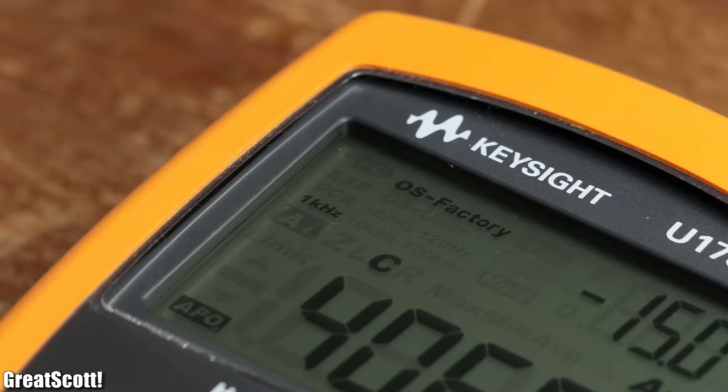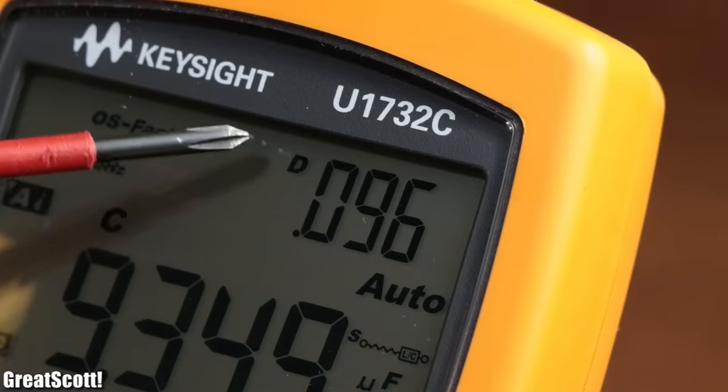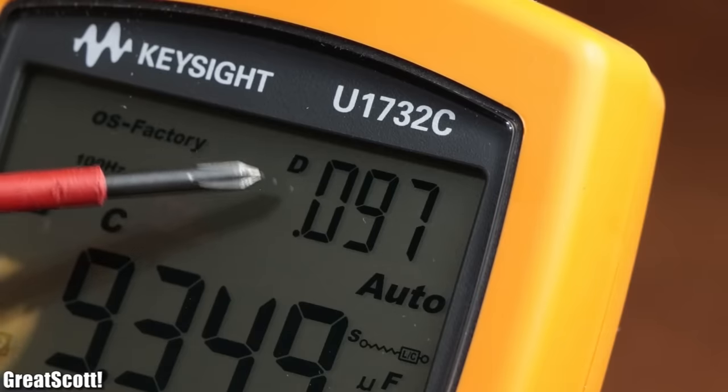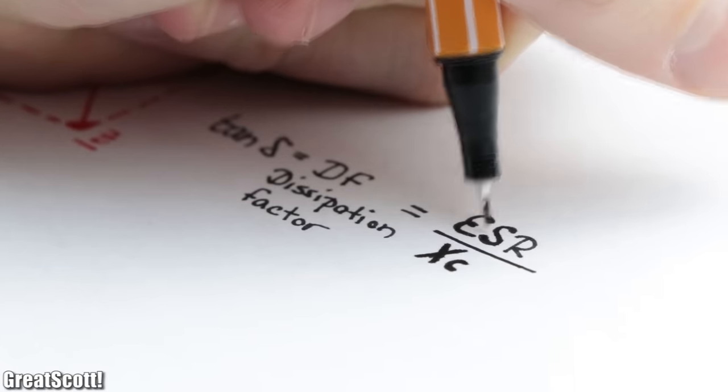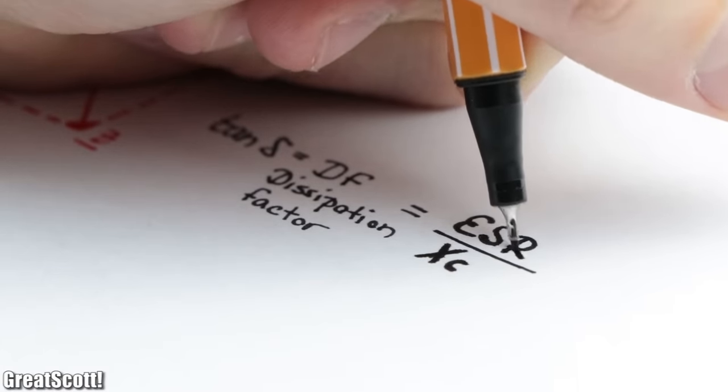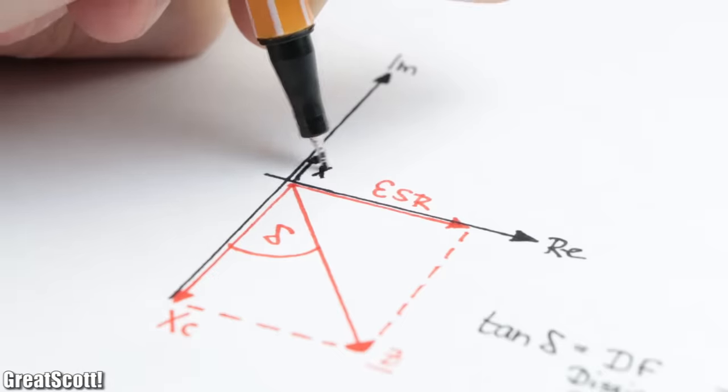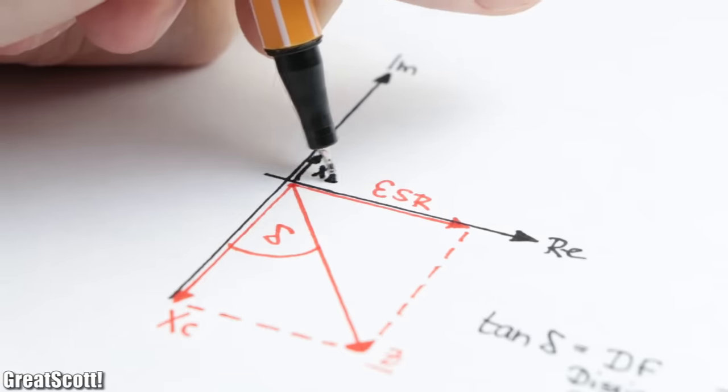As an example, we can use the 100 Hz measurement of the LCR meter to determine a dissipation factor of 0.097. The dissipation factor describes the relation between the ESR and the capacitive and inductive reactance. But let's neglect the inductive one for now.